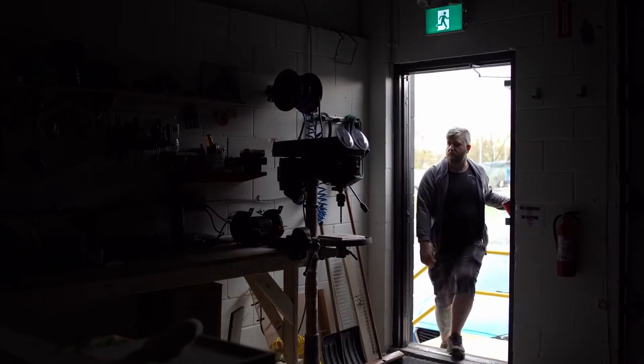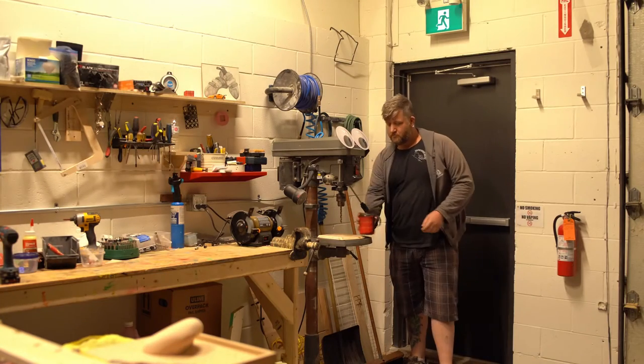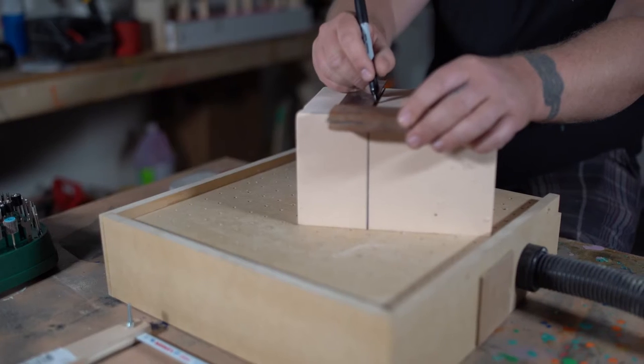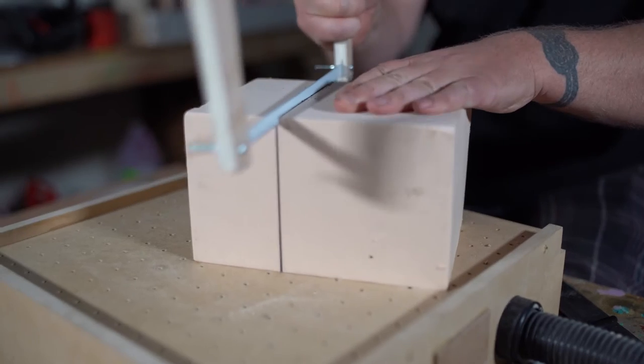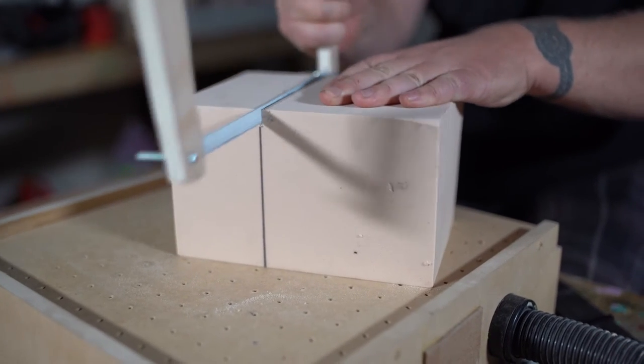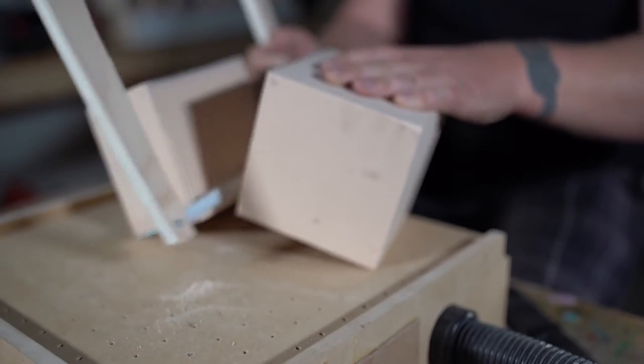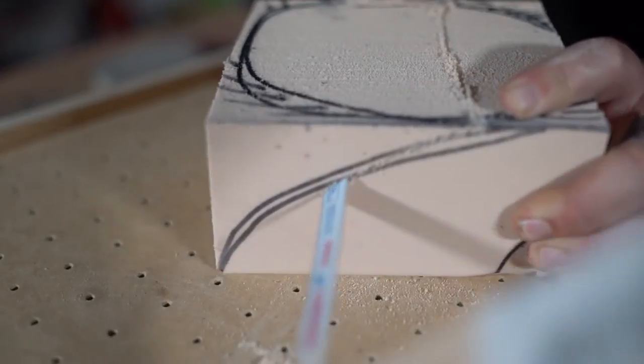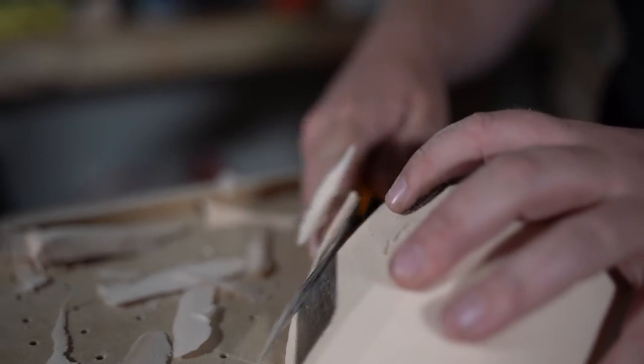For most climbers, the holds going on the wall is the beginning, but for hold makers, holds going on the wall is the end goal. When you or I look at a climbing hold, usually the first things we think of are: is it positive, is it flat, slopey, a good edge? How does it feel and how hard will it be to hold?